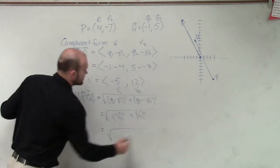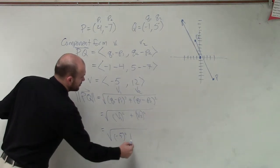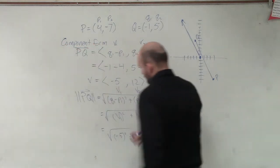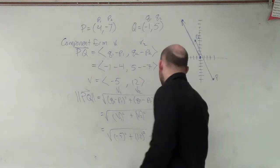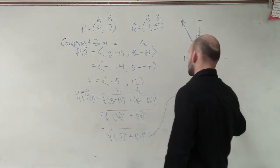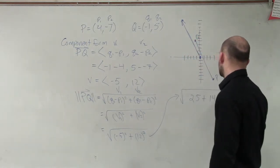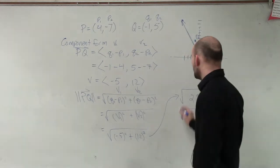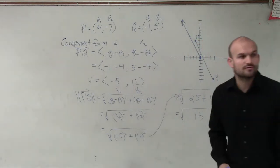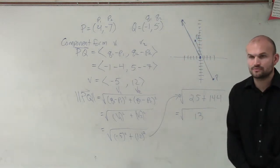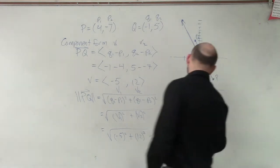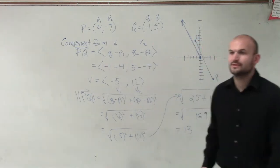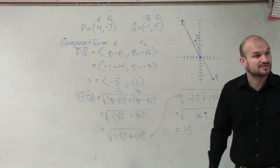So I'm going to have the square root of negative 5 squared plus 12 squared. Negative 5 squared is going to be 25 plus 144. Take the square root of that. Therefore, the magnitude is going to equal... I'm sorry, I was thinking ahead. Square root of 169, which is equal to 13. So the distance of this vector is 13.